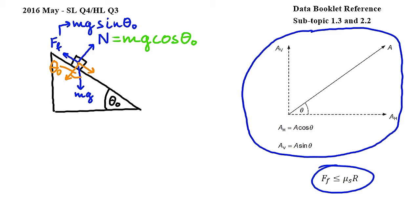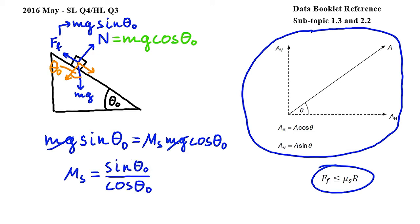So, substituting for Ff, we have mg sin theta 0, which is then equal to mu s, and the normal reaction force is n, which is equal to mg cos theta 0. Canceling mg from both sides and dividing by cos theta 0, we get mu s is equal to sin theta 0 over cos theta 0.